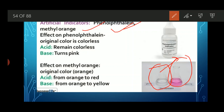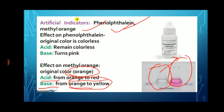In neutral solution, the color of phenolphthalein is red. Similarly, for methyl orange: the original color of methyl orange is orange. When it comes in contact with acid, its color changes from orange to red. When it comes in contact with bases, it changes from orange to yellow. These are the artificial indicators. So in total we have three types of indicators: natural indicators, olfactory indicators, and artificial indicators.